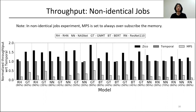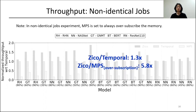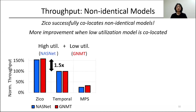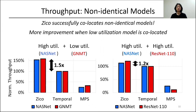For non-identical job training, we use various sharing combinations with different memory requirements and different GPU core utilization. On average, ZICO shows 1.3 times higher throughput compared to temporal sharing and 5.8 times higher throughput compared to MPS. In the first highlighted case, NASNet (high GPU utilization) and GNMT (relatively low GPU utilization) are collocated. Due to GNMT's low GPU utilization, the GPU has more ample compute cycles, leading to higher throughput gain. In the second case, both NASNet and ResNet-110 have high GPU utilization, so ZICO consistently shows higher throughput but with relatively smaller gain.